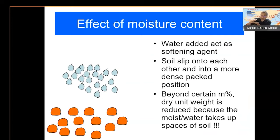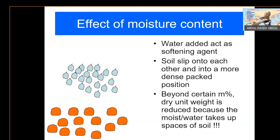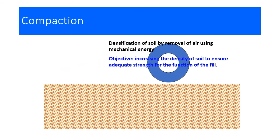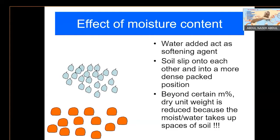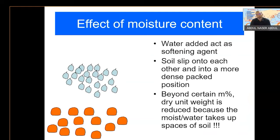What we are trying to achieve is the optimum strength — the highest strength possible from compaction. For example, if the roller goes back five times, what kind of compaction strength can you get? You want to optimize that. Even if you go more than five times, the strength will not increase further because of the effect of moisture content.